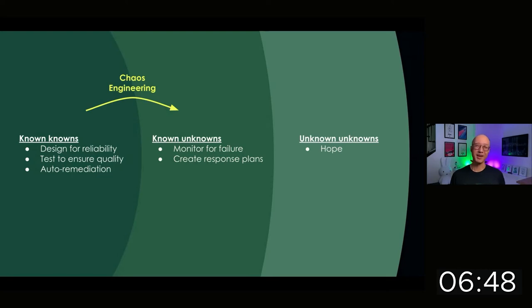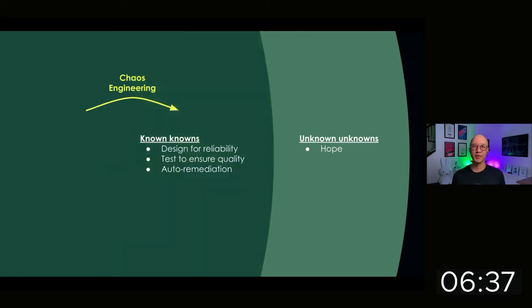The amazing thing about chaos engineering and why I love it is that it allows us to explore our known unknowns. In doing this, we can convert our known unknowns into known knowns and we get a better understanding of what our failure modes look like and how to remediate them or avoid them.